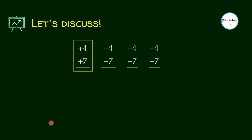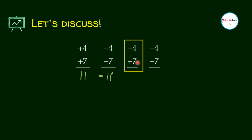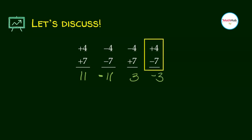Add the following numbers. 4 plus 7 is 11 — we have the same sign, so you add. Here also, negative 4 plus negative 7: same sign, so you add, but the answer is negative because we copy the common sign. Here, negative 4 plus 7: you have different signs, so subtract. 7 minus 4 is 3, and which sign do we use? Which one is bigger — 4 or 7? It's 7, so copy the sign: positive 3. Then similarly, the answer for the last one is negative 3.